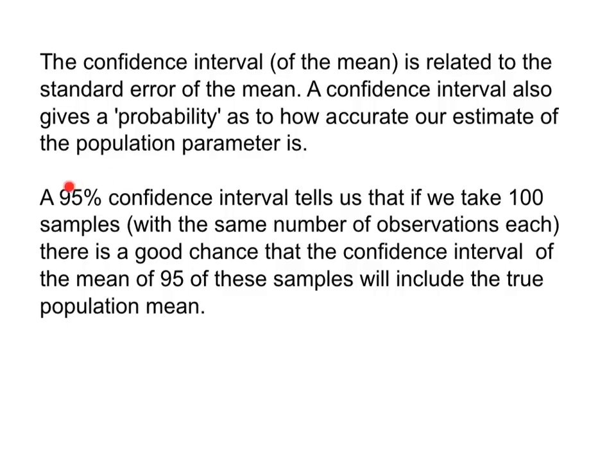For example, a 95% confidence interval tells us, and that is really the precise definition here, it tells us that if we take 100 samples and we have the same number of observations in each sample there is a pretty good chance that the confidence interval of the mean of 95 of these samples will include the true population mean. Sounds a little bit esoteric, but hopefully it will become clear.